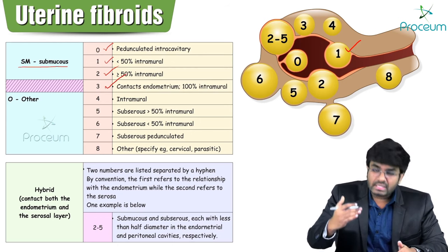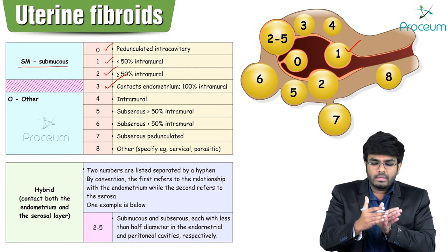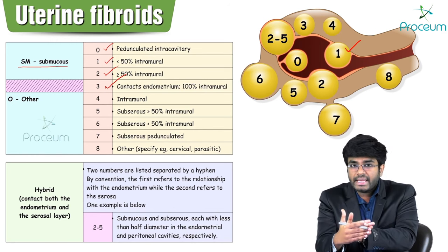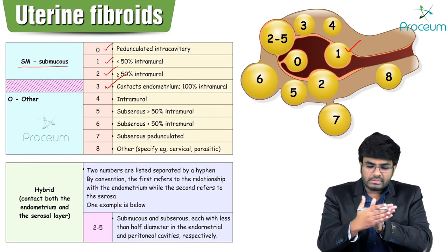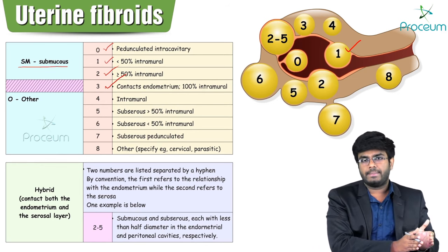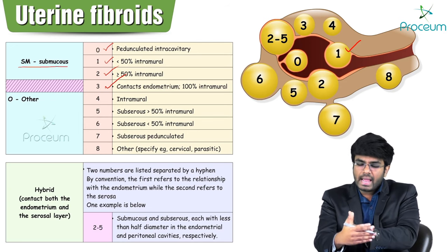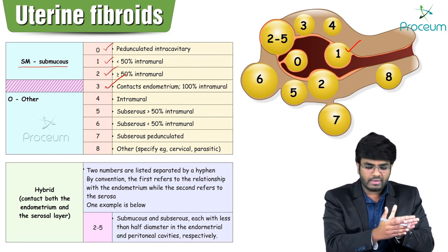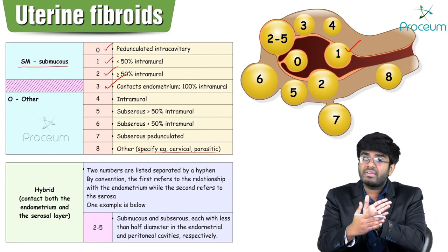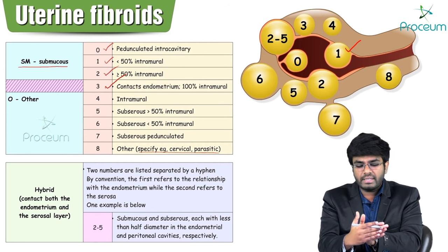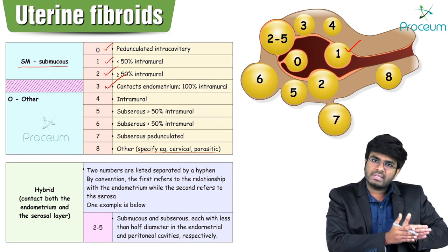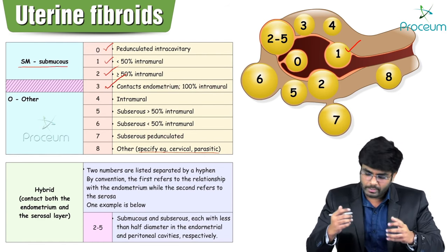Grade 3 is going into the wall. The numbering system goes from 0 to 8, moving from inside the uterine cavity to the outside. Grade 0 is completely inside, and moving toward grade 7 means completely outside — grade 8 is detached from the uterus. So grades 0–2 are submucous, and as we progress through 3–7, we move toward the subserosal region.